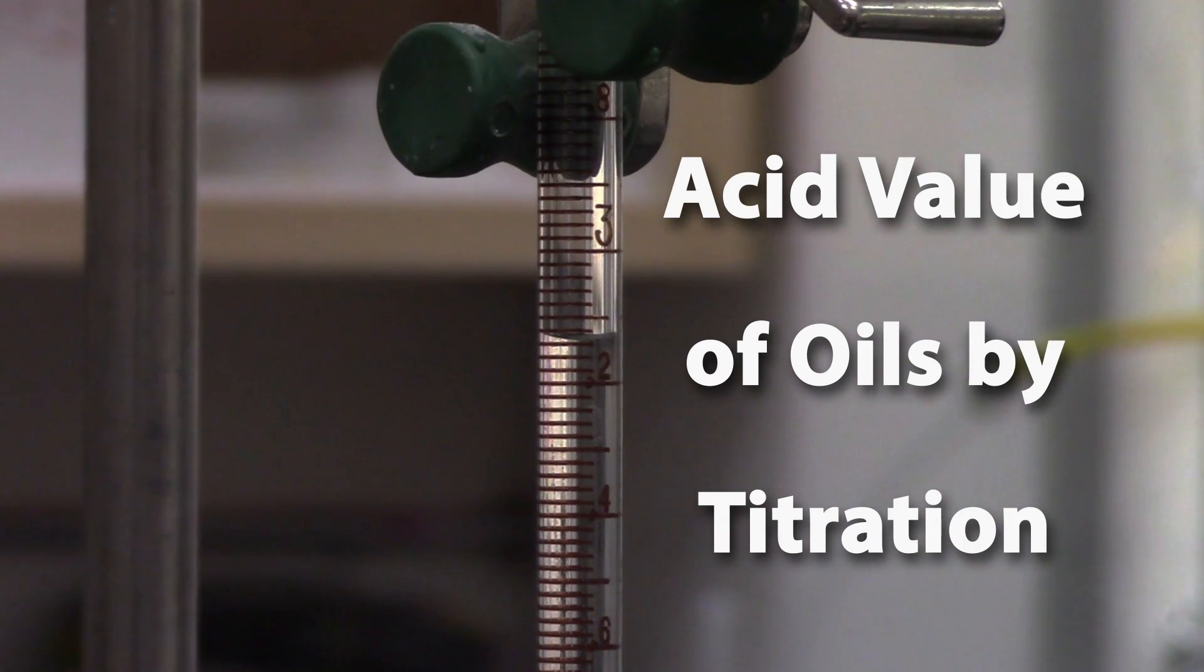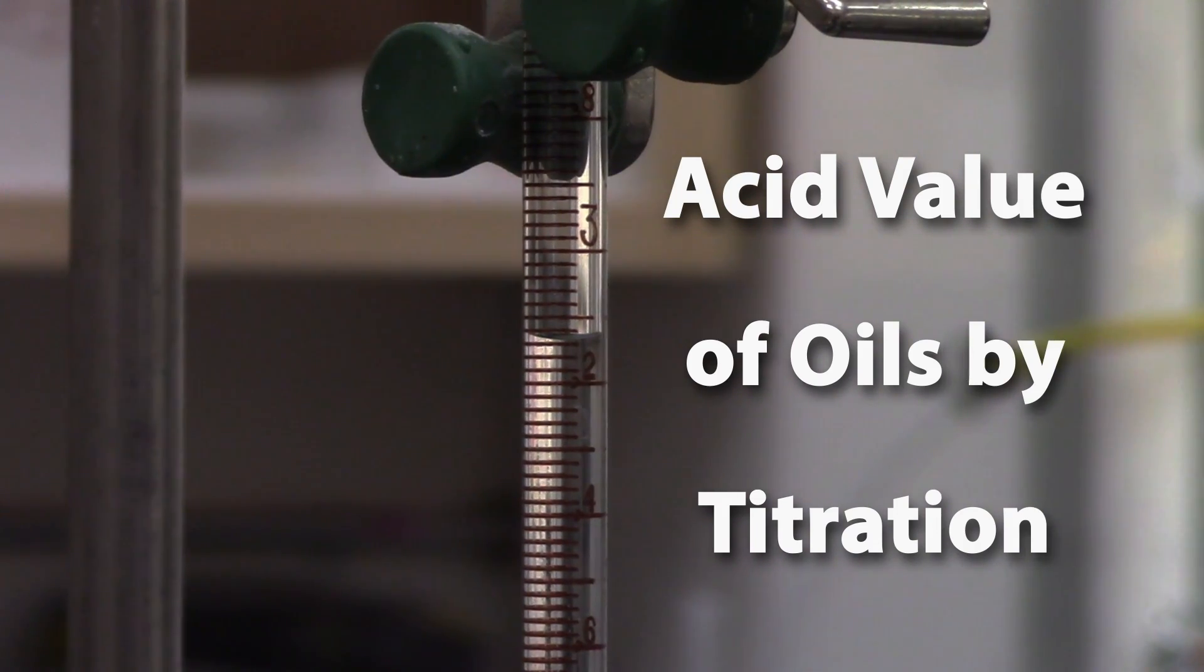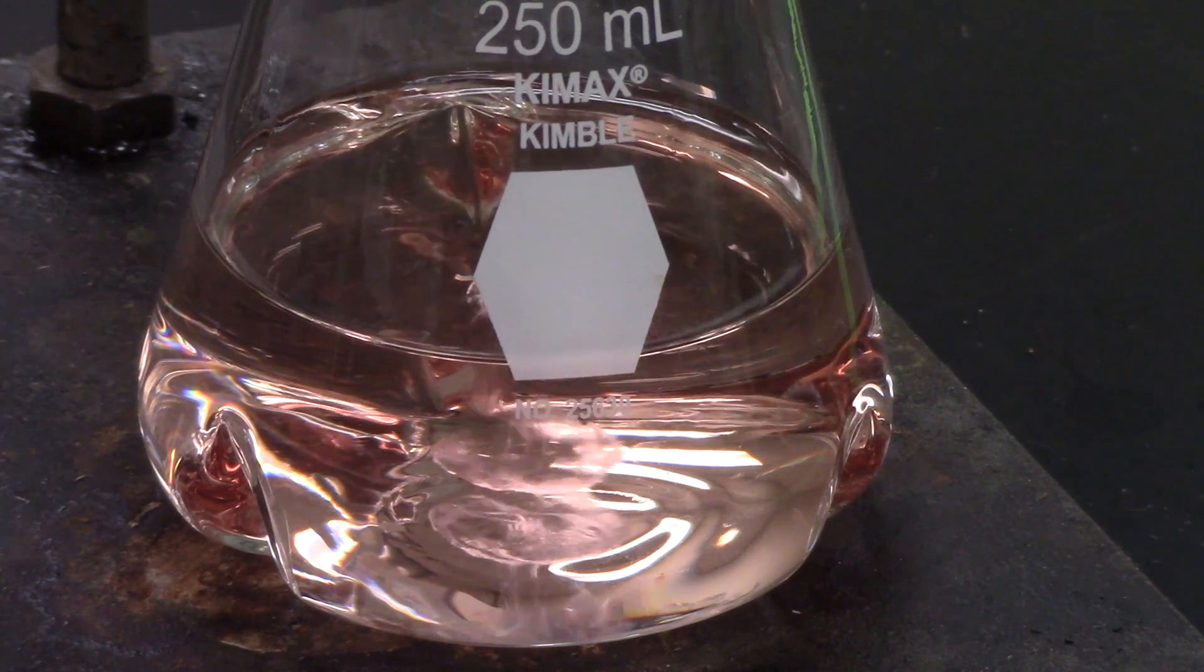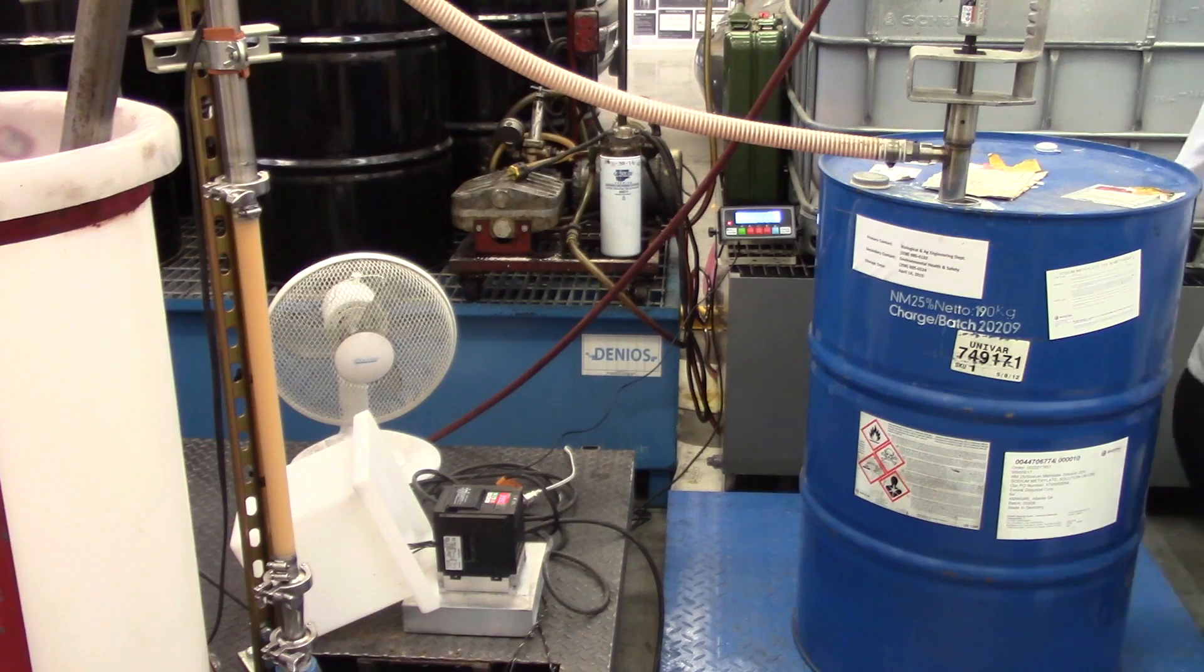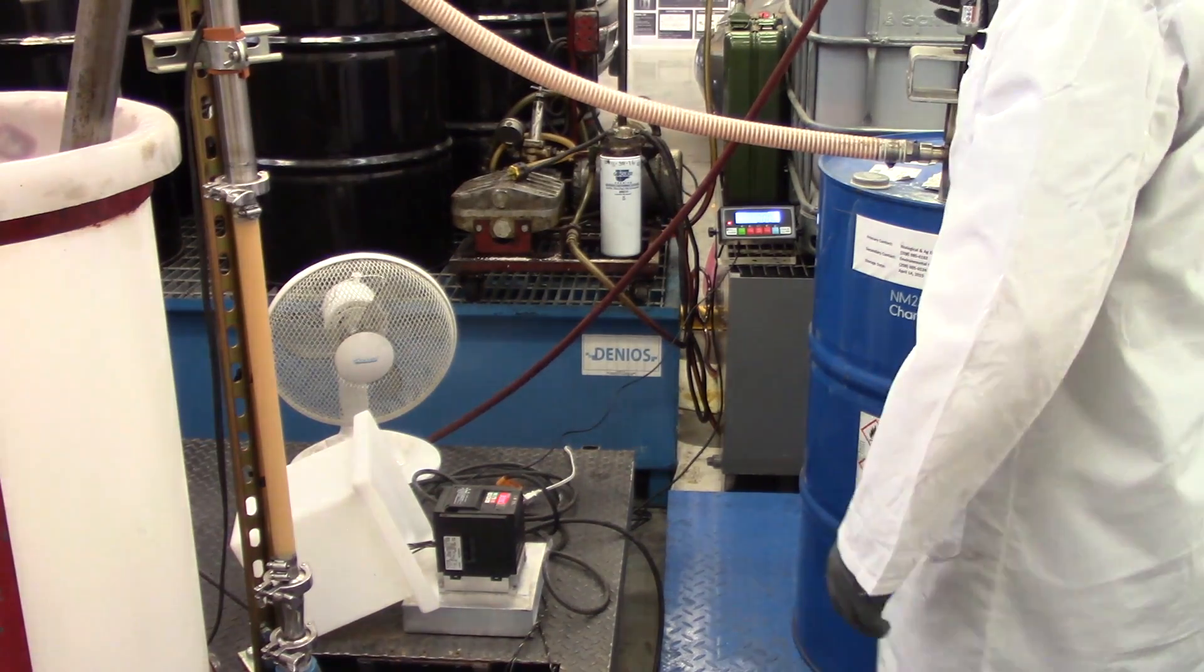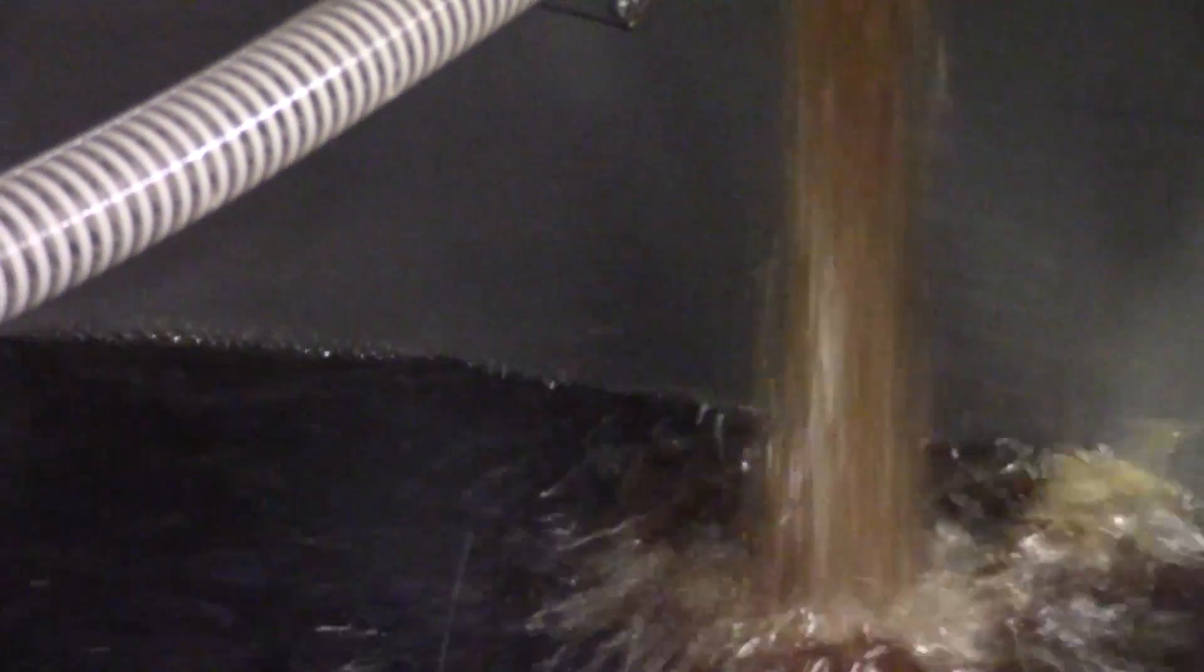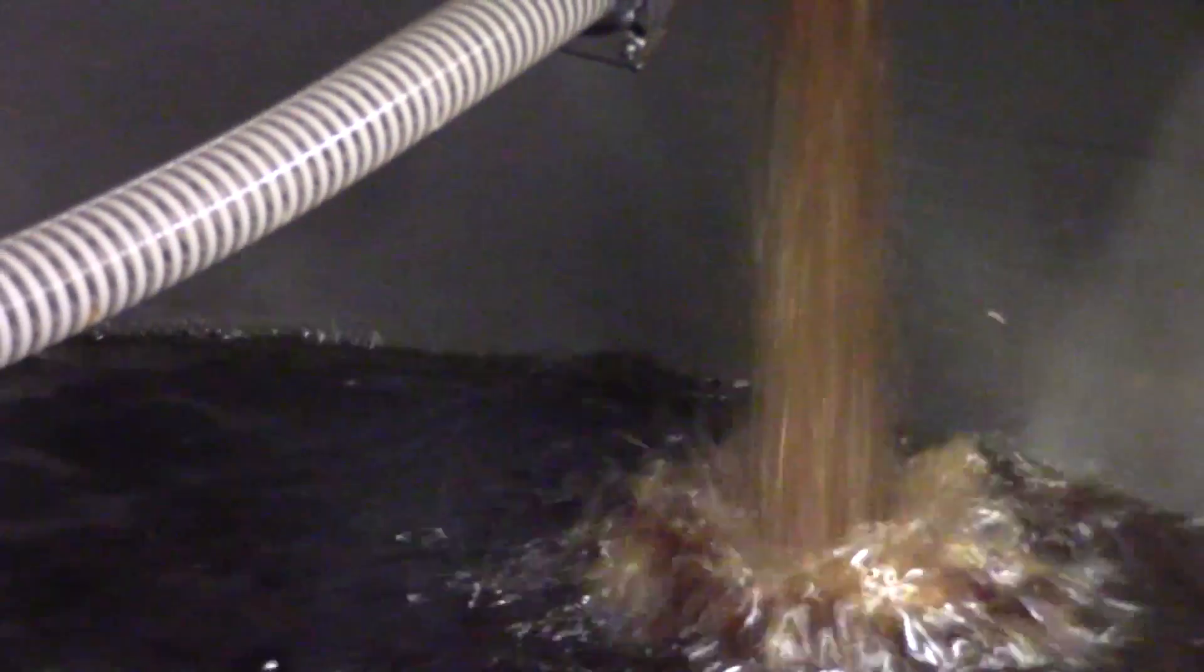Acid value of oils by titration for biodiesel. The acid value test is used twice in biodiesel production. The first time determines how much catalyst to use in the biodiesel recipe subject to the properties of the oil. The second time determines how long the fuel shelf life will be subject to the amount of free fatty acids in the biodiesel.